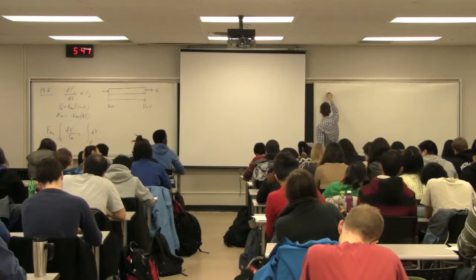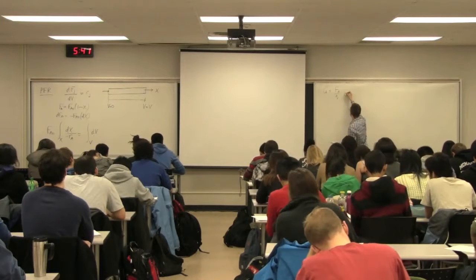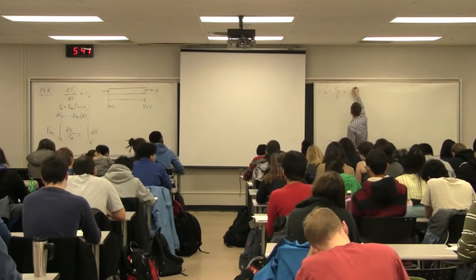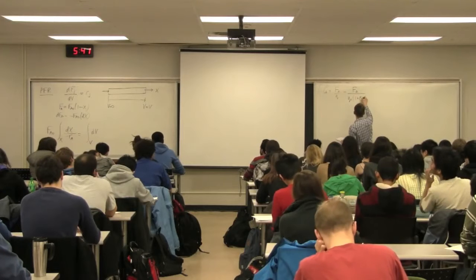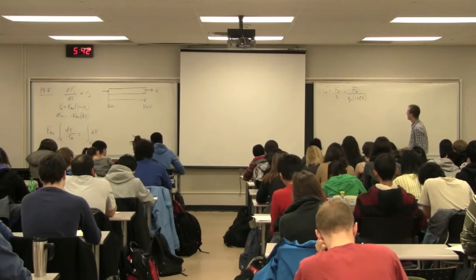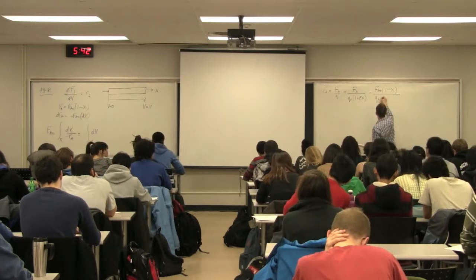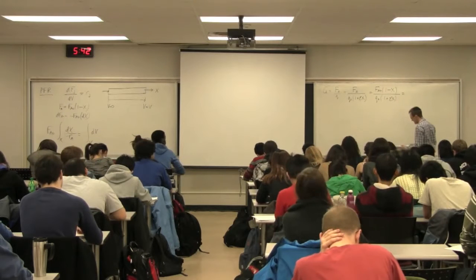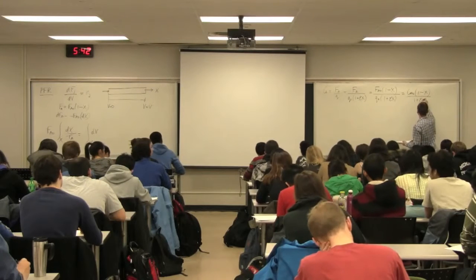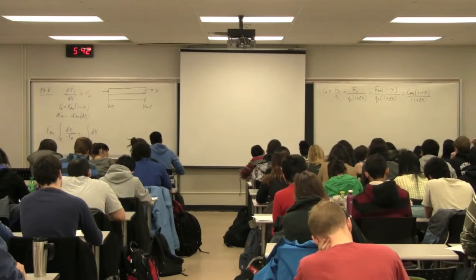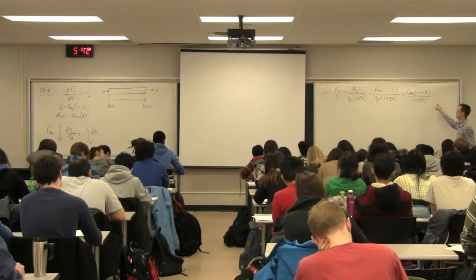From our stoichiometric tables, CA equals FA over Q, the volumetric flow rate. I showed last time that Q equals Q0 times (1 plus epsilon x). Substituting in the relationship for FA, it's FA0(1 minus x) over Q0(1 plus epsilon x). So CA equals CA0 times (1 minus x) over (1 plus epsilon x). We're very familiar with that expression, or you can just read it from the stoichiometric table.